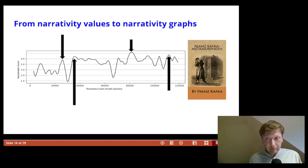Here you can see the narrativity graph of Kafka's metamorphosis. The peaks of the line seem to align with passages in the text that would typically be identified by literary scholars as important to the development of the story. The first peak, that is highlighted by the black arrow on the slide, for example, corresponds to the passage in which the protagonist, Gregor,